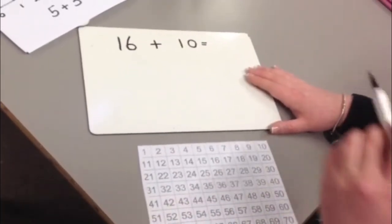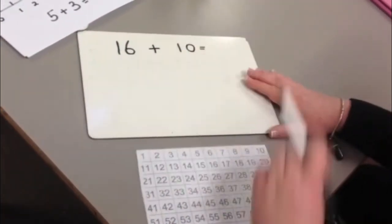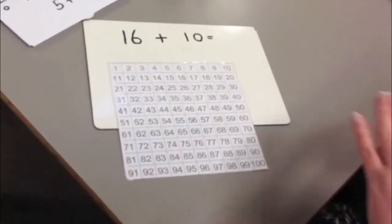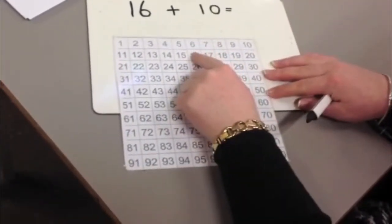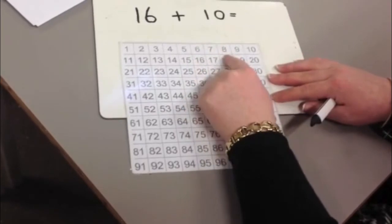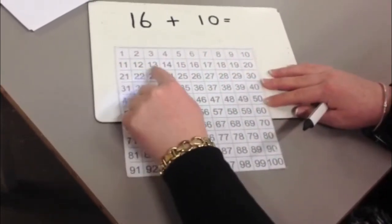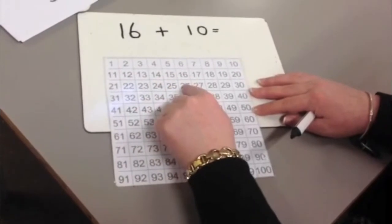If I was doing a bigger sum, like 16 add 10, I could use a 100 square. So I'd put my finger on 16 and do 10 jumps: 1, 2, 3, 4, 5, 6, 7, 8, 9, 10.